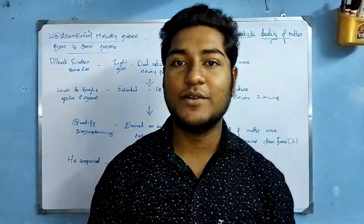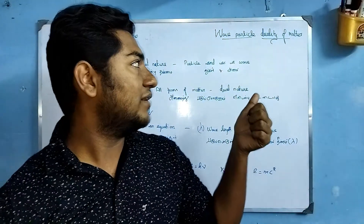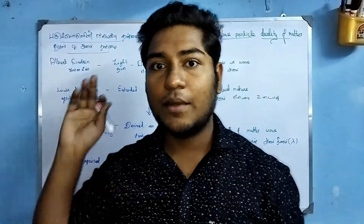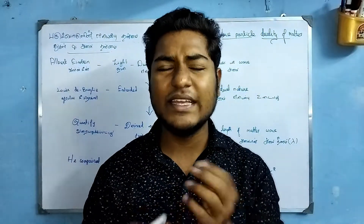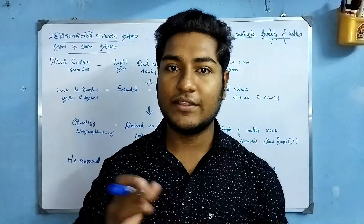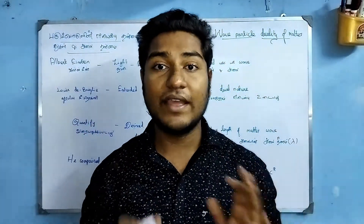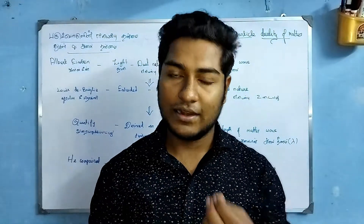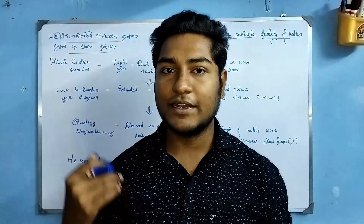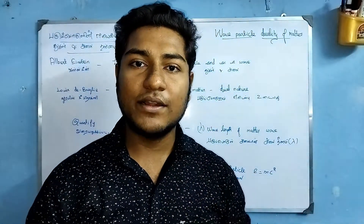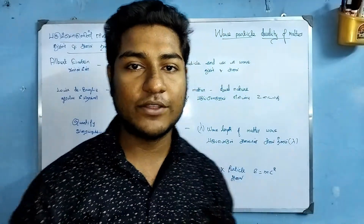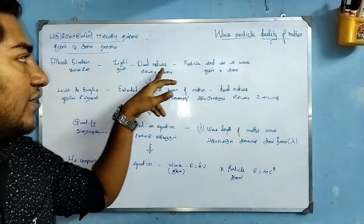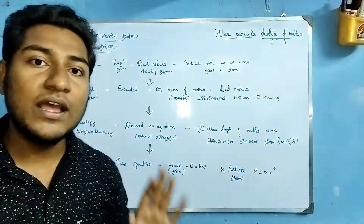Hi friends, now we are going to talk about Wave Particle Duality of Matter. We are going to talk about the two types of duality of matter. The first type involves Albert Einstein — Einstein and the nature of light. That is the duality of matter; the duality of nature is the duality of matter.